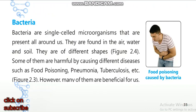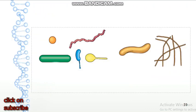Bacteria are single-celled microorganisms that are present all around us. They are found in the air, water, and soil. They are of different shapes. Some of them are harmful, causing different diseases such as food poisoning, pneumonia, and tuberculosis. However, many of them are beneficial for us. You can see here the different shapes of bacteria — they may be circular, rectangular, or string-shaped.